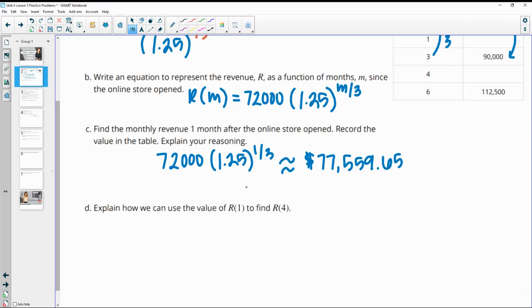So then explain how we can use this value. So this is R of one, right, the revenue after one month. Explain how we can use R(1) to find R(4).